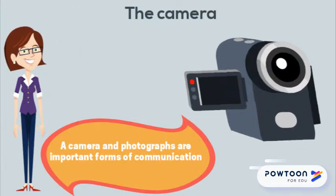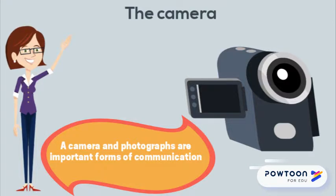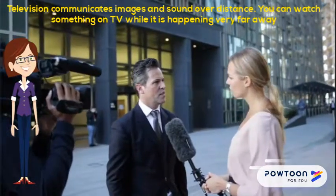The camera and photographs are important forms of communication. To make photographs, you need a camera with a light-sensitive film that is then developed and made into a picture on special paper. Early cameras were closed boxes with a small hole through which the light from the things being photographed could come. The light fell onto light-sensitive film and made images of the things being photographed.